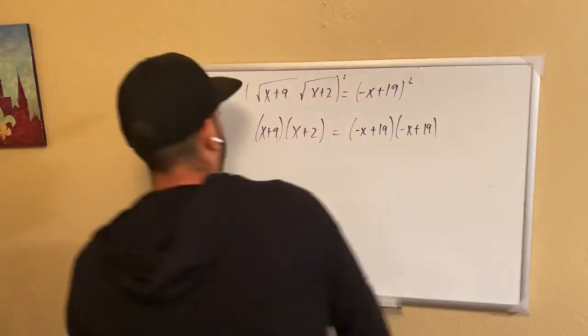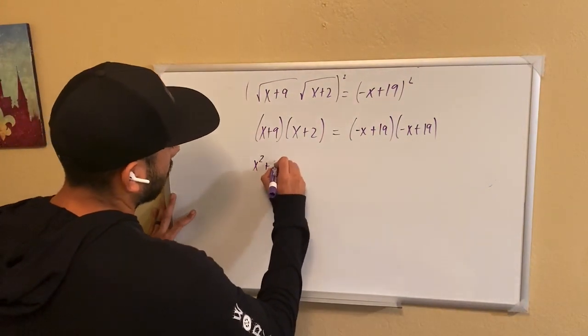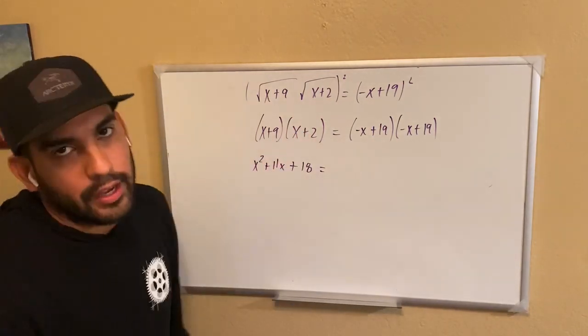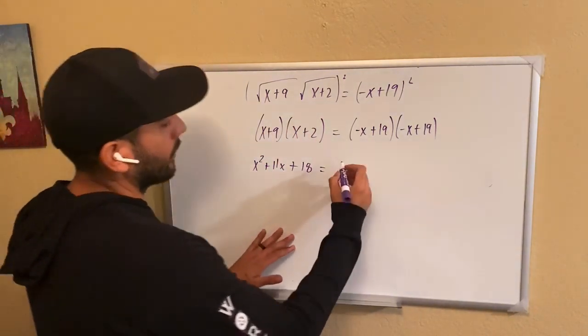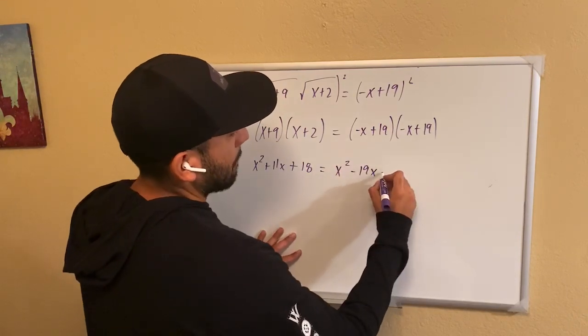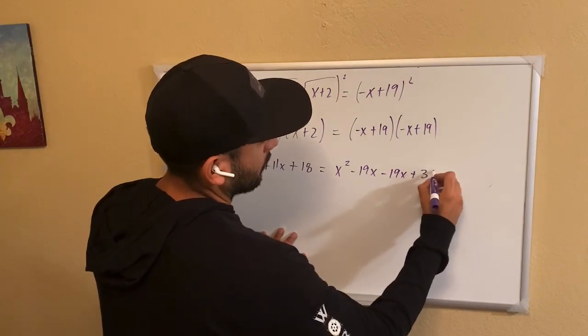Anyway, on the left side, let's go ahead and FOIL or just chip you that out. Becomes x squared plus 11x plus 18. The right side, let's go ahead and FOIL that out.